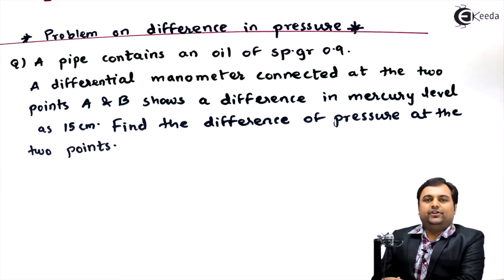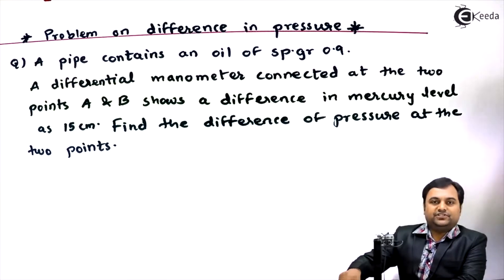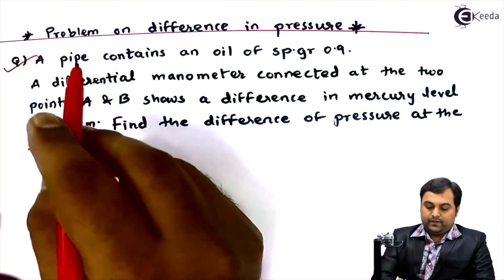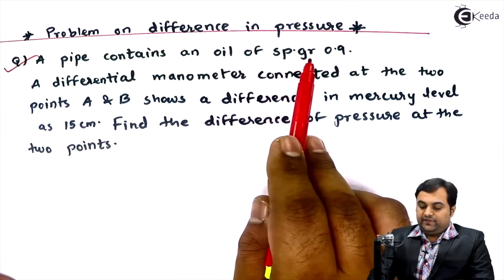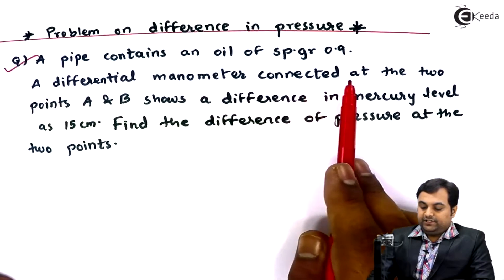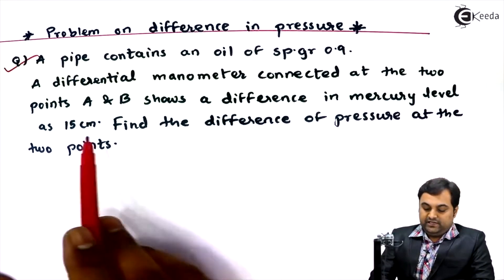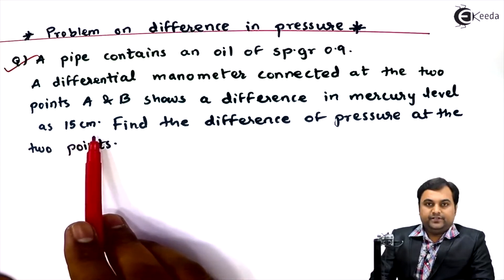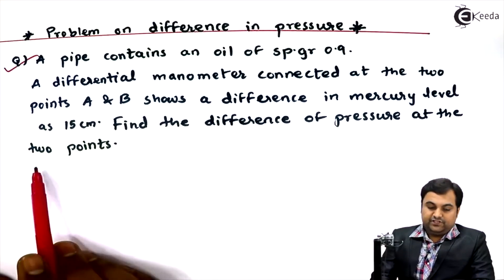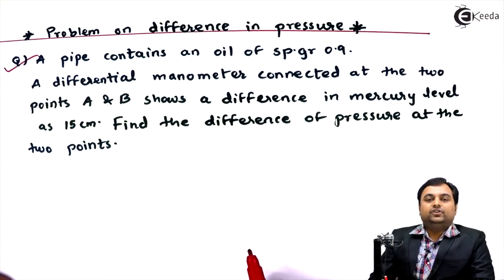Hello friends, in this video we will see a problem on how to calculate the difference of pressure using a differential manometer. A pipe contains an oil of specific gravity 0.9. A differential manometer connected at two points A and B shows a difference in mercury level of 15 centimeters. Find the difference of pressure at the two points.